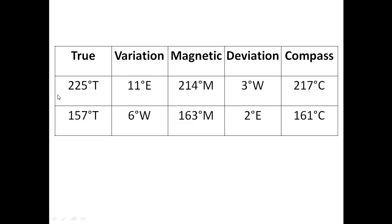Let's look at an example. If you have a true heading of 225 degrees on your chart and want the compass heading for your ship: subtract your easterly variation — 11 degrees east — giving a magnetic heading of 214 degrees. If the deviation at 214 degrees magnetic is 3 degrees west, add that to get 217 degrees compass. For the reverse: starting from a compass heading of 161 degrees, with 2 degrees easterly deviation, add to get 163 degrees magnetic, then subtract 6 degrees westerly variation to get a true heading of 157 degrees for your chart.